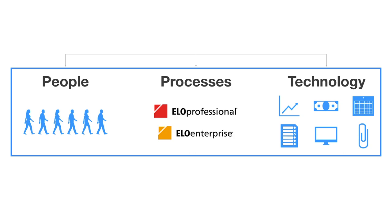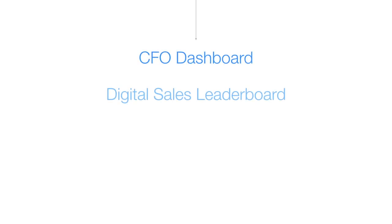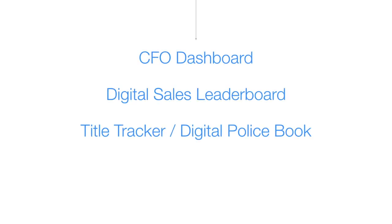He can securely access his reports anytime, anywhere, and without relying on anyone else. With Atlas AI for Auto, Patrick can confidently make strategic decisions for his dealership, with standard reports like a CFO dashboard, a digital sales leaderboard, an automatically generated and updated digital police book, and a configurable and visual vehicle reconditioning tracker that makes tracking a vehicle's status as simple as tracking a pizza.